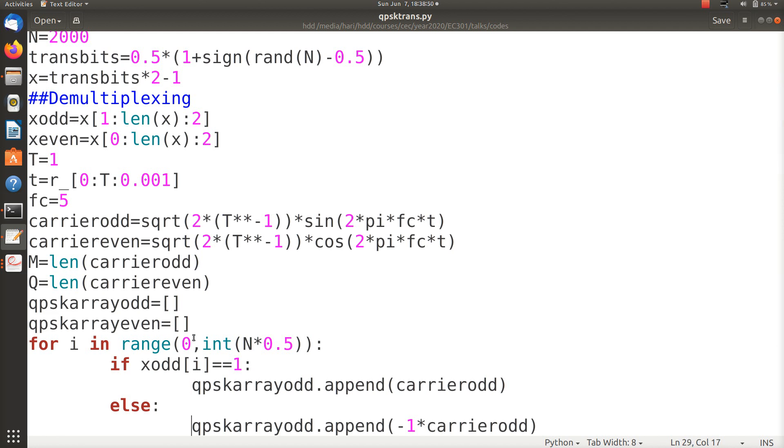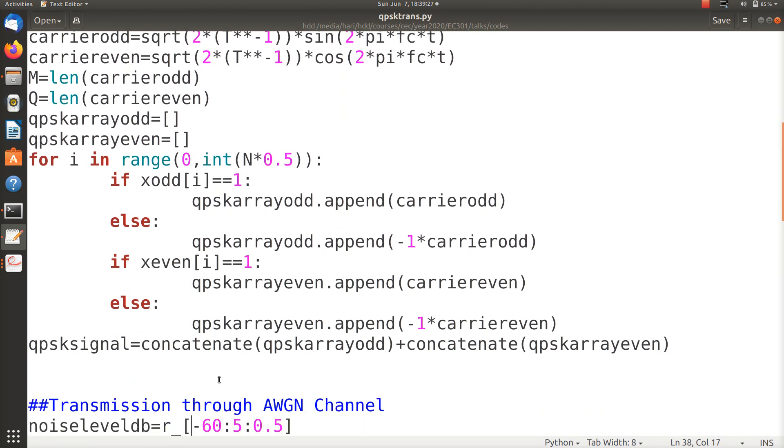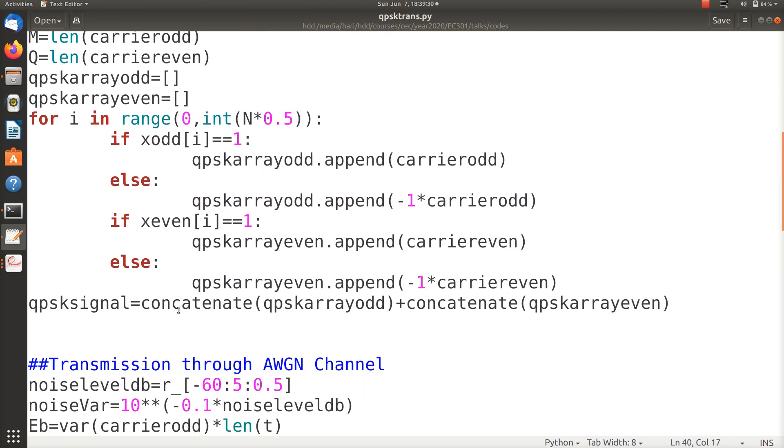Now if the odd bit is one - this i is from 0 to n/2 because I divided the block into two, the even and the odd part - so if x_odd[i] is one, the QPSK odd array is appended with the carrier, or else it is concatenated with a minus one because it looks like a BPSK system. Likewise I do for the even part. Now the QPSK signal is generated by concatenating and adding them together. So up to this line, the transmitter is created. The transmitted signal is ready.